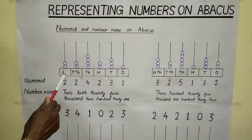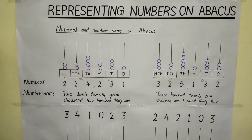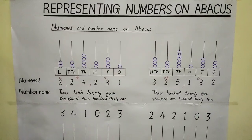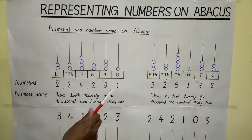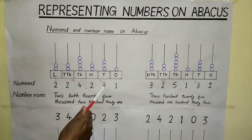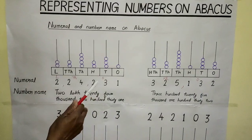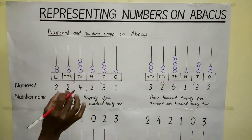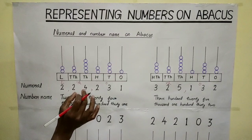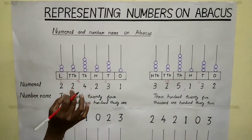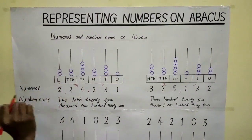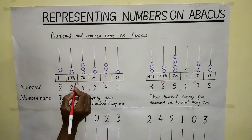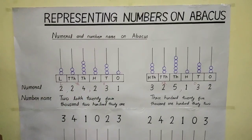You listen — lakhs is here. Lakh is only in the ancient numbering system. In the ancient numbering system, the first period has three digits, and we put a comma to separate it. The next period has two digits, and the next also has two digits. This is the one's period, this is the thousands period, and this is the lakhs period.